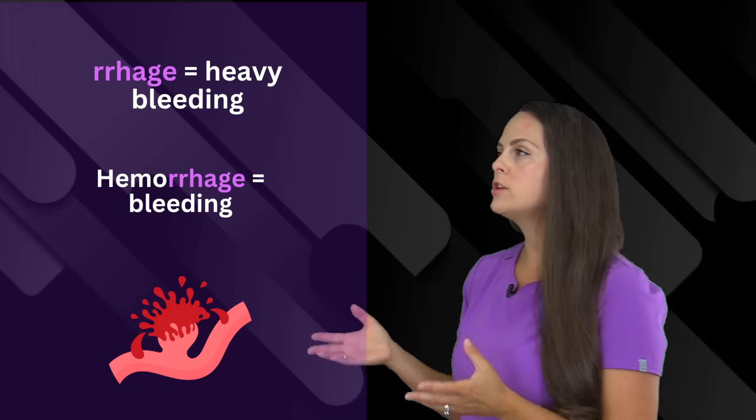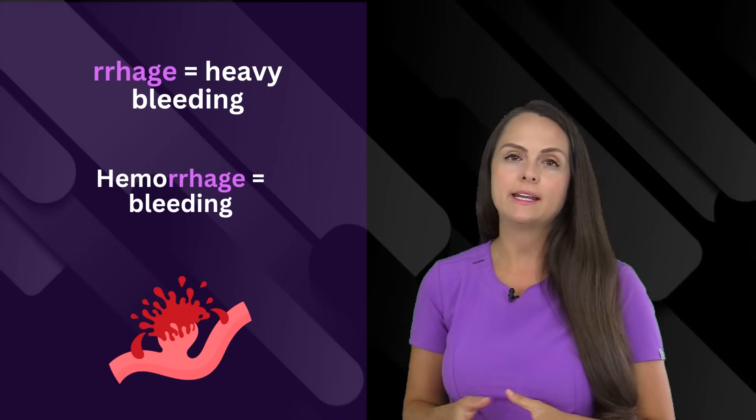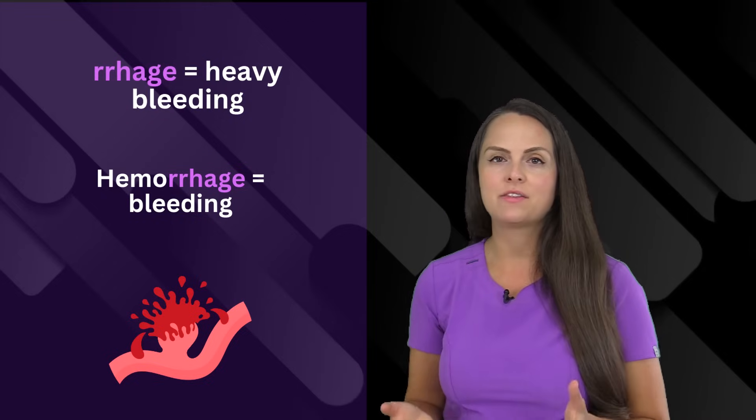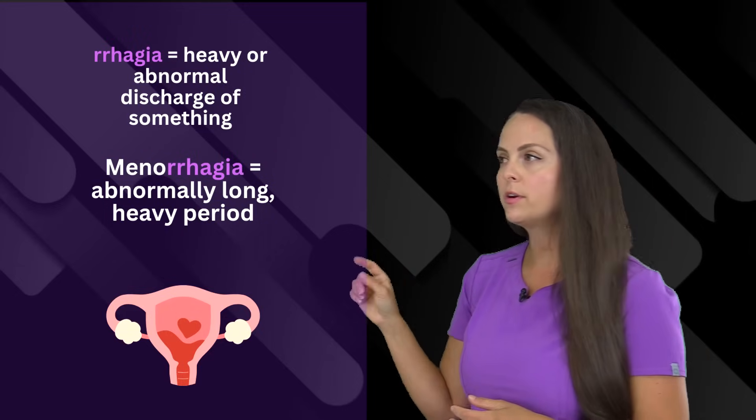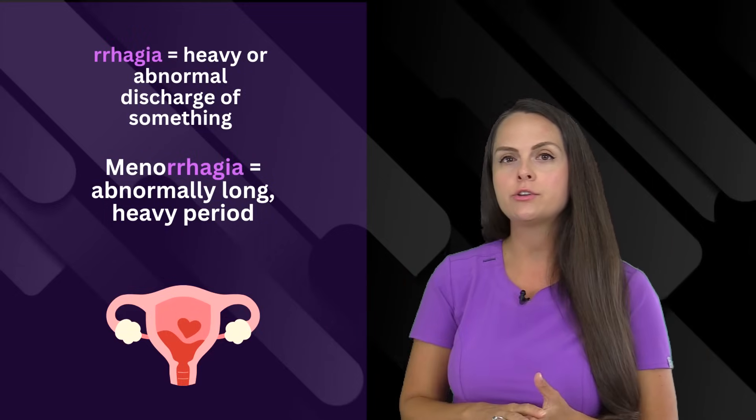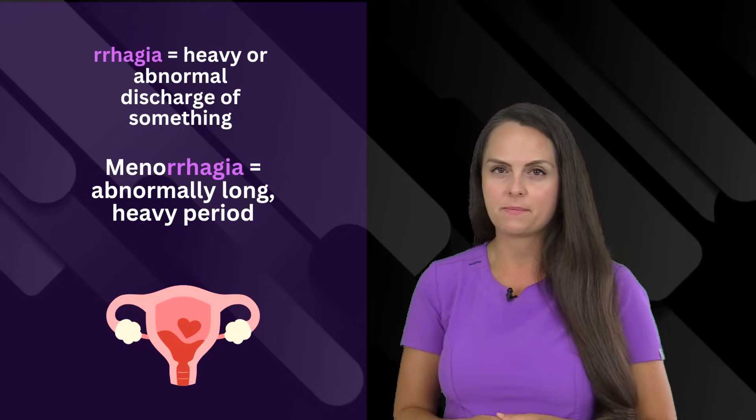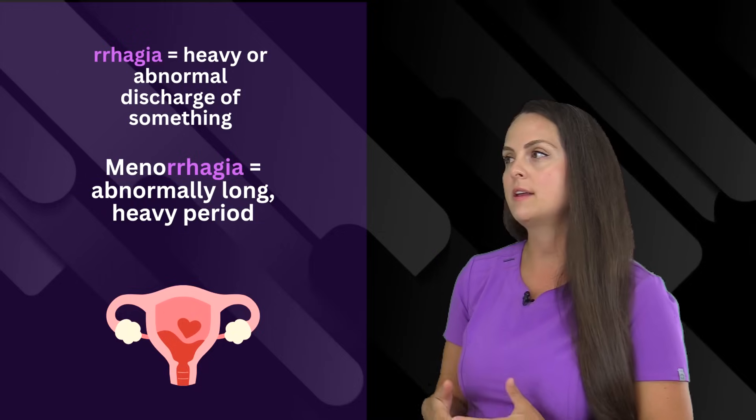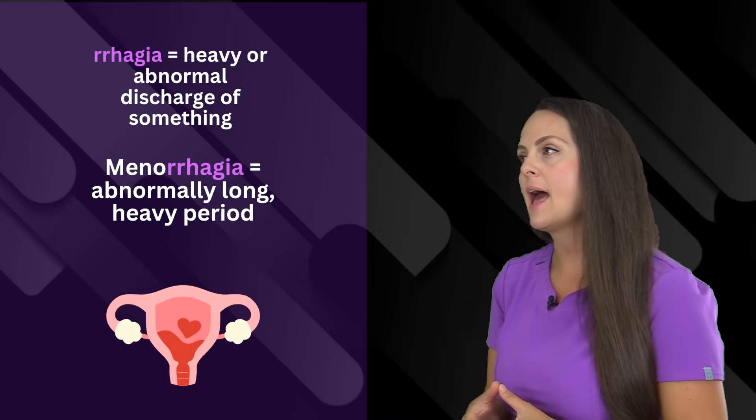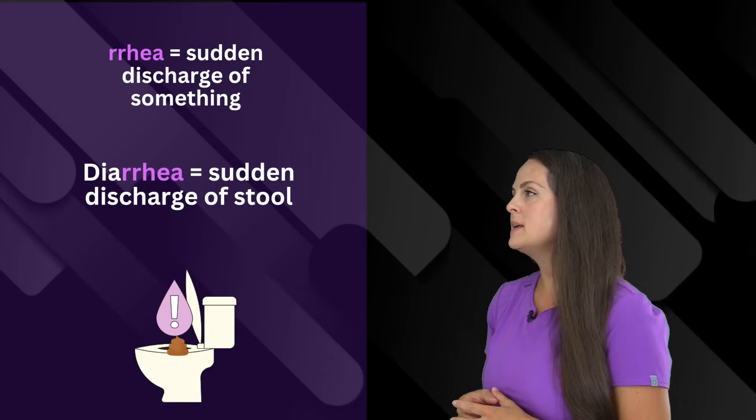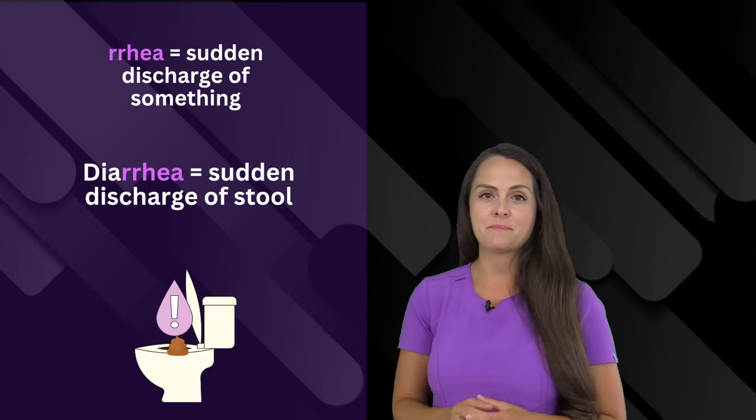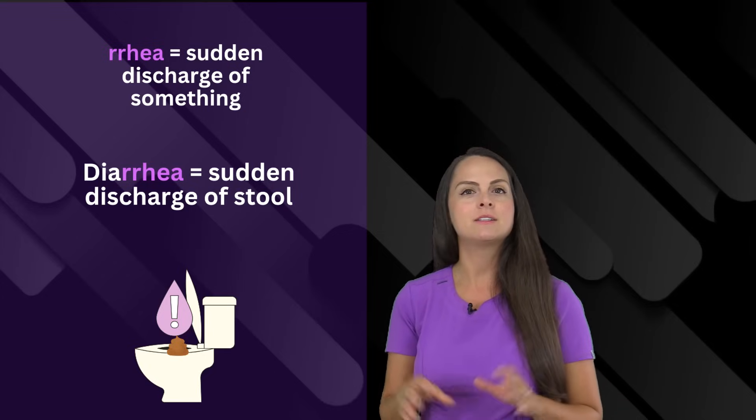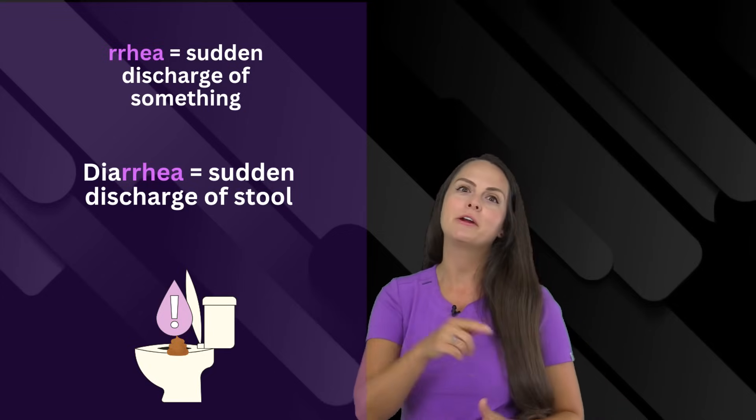Next up is the suffix rrhage or rrhagia. And this means heavy bleeding. If a person has an internal hemorrhage, we're talking about bleeding inside the body. Our next suffix is sort of similar to the previous one. It is rrhagia. And this refers to heavy or abnormal discharge of something. If a person has a long, heavy period, hence they're having abnormal discharge, we can term this as menorrhagia. The suffix rrhea means flow or the sudden discharge of something. And something that we have all had at some point in our lives is termed diarrhea.